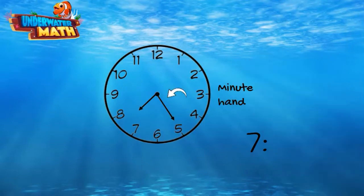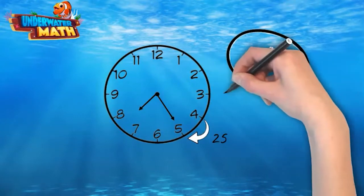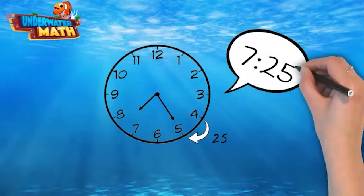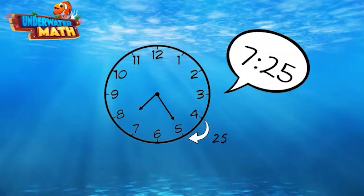The long hand counts the minutes. It starts at the top and works its way around the clock. Each one of these numbers on the clock represents 5 minutes. This minute hand says it is 25 minutes past the hour. This clock says it is 7:25.